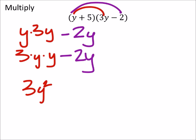And then I distribute the 5. So I've got a 5 times 3y, so plus 5 times 3y, which would be a positive 15y.